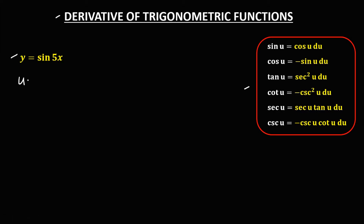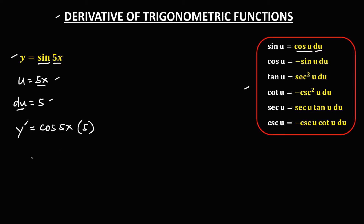So u is equal to 5x. Then for the derivative of u, so the derivative of 5x, that's 5. So to find now the derivative, that's y prime. For sine, that's cosine u, and u is 5x, so cosine 5x, then times the derivative of u, that's 5. So therefore y prime is equal to 5 cosine 5x.